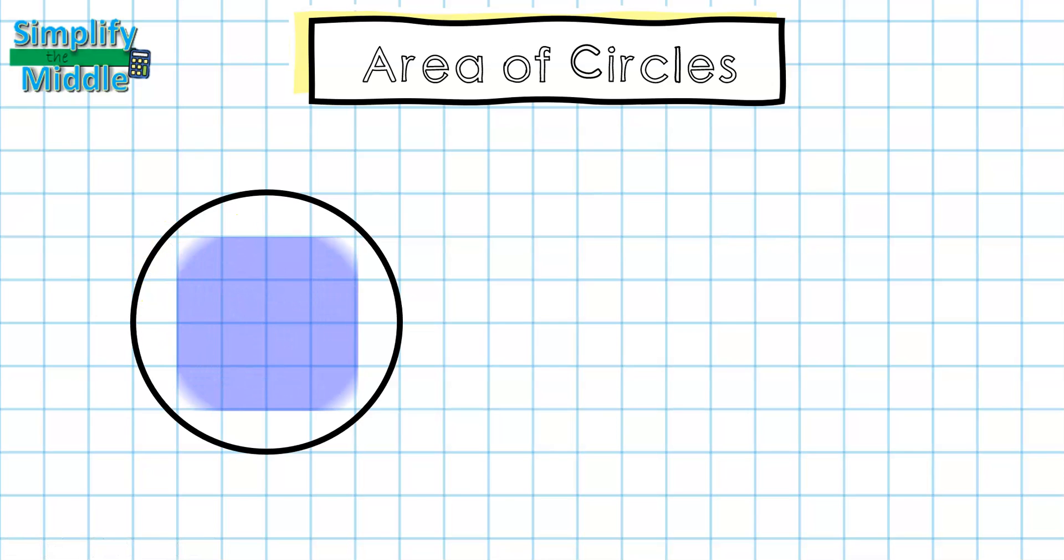If I look inside the circle, I notice there are 4 by 4, or 16 squares that fit completely inside the circle. But what about the outer edges? These are partial squares, so how do I account for those?